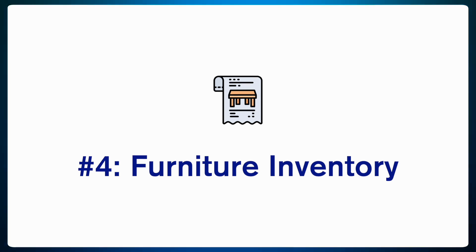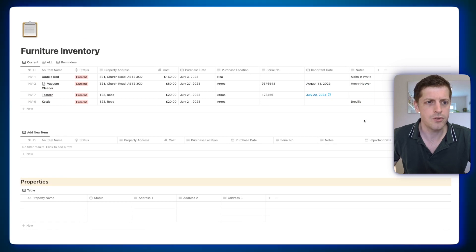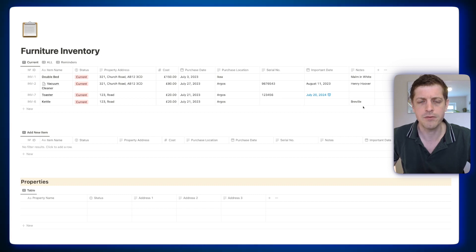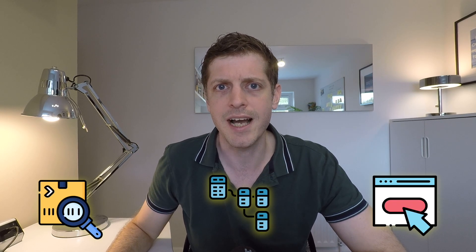Fourth on our list is a furniture inventory. It can be really useful to track the various items you've got in your different investment properties so that you can record their serial numbers when you purchase them, any attachments, information, et cetera. Here you can see my furniture inventory — we've got item names, their current status, what house they're in, what we paid for them and when, any serial numbers, important dates such as anything that needs renewing, and some brief notes. The three Notion features I want to show here are: how to add unique IDs, how to add a relationship property to the database, and how to add a button to enable you to add a new item.